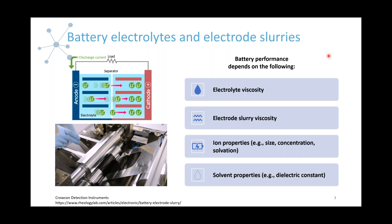Feel free to leave your questions in the prompt and we will get to those by the end of the seminar. A battery is a device that stores chemical energy and converts it to electrical energy. The battery contains four primary components: the anode, the cathode — which can be prepared with a battery electrode slurry — as well as the separator and the electrolytes.